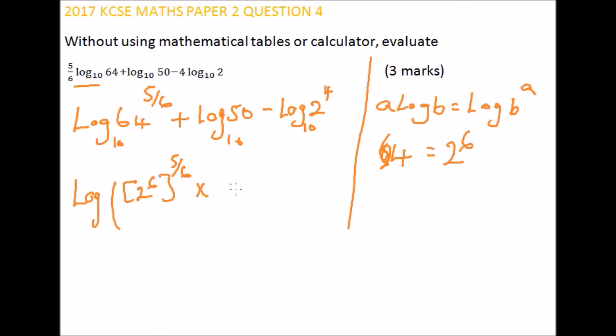Because of this plus, it will be minus, multiplied by 50, and because of this minus, you have 2 raised to power 4.